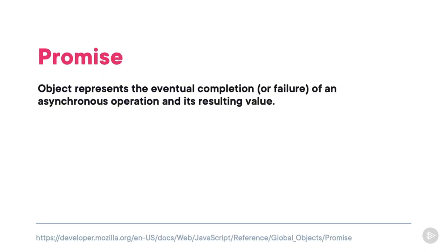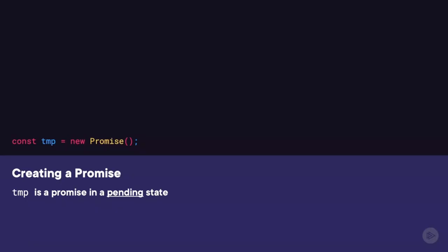How do you create a promise? Before we answer that, let's look again at the definition from earlier: a promise is an object that represents the eventual completion or failure of an asynchronous operation and its resulting value. Do you see the word object? A promise is just an object — that means we create a promise the same as any other object in JavaScript using the new keyword. As you can see with the code on screen, temp is now a new promise, and at this point it's also a pending promise. But how do we change its states?